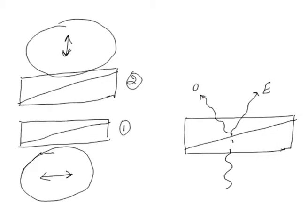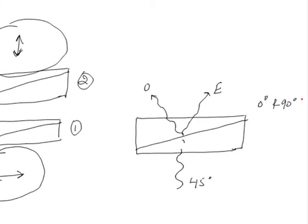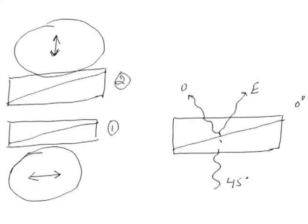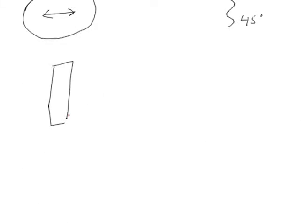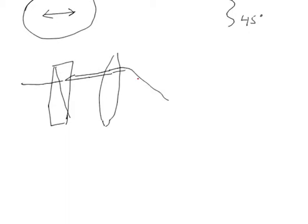These two rays are spatially separated — or 'sheared' — meaning they are moving adjacently in the optical path. These two sheared rays are perpendicularly oriented to each other, at 0 and 90 degrees. The light enters the prism, passes through the condenser lens, and the adjacent rays are focused onto the specimen plane.